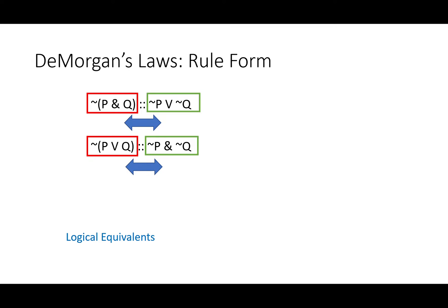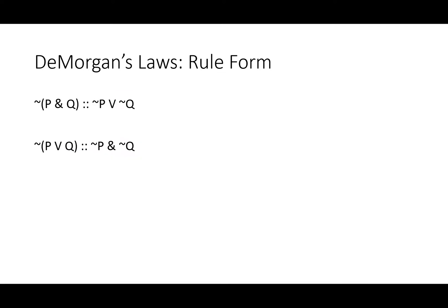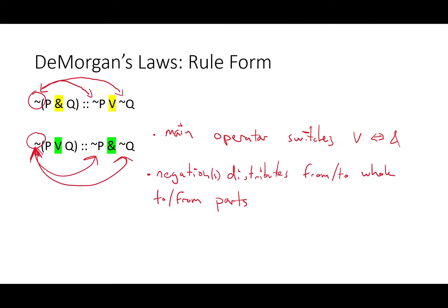Like all rules of replacement, these are logical equivalents. On either side of the four dots, we have two statements with the exact same truth value that can be substituted one for another at any time. Our first law says something like they're not both true is equivalent to one or the other is false, while the second says neither one is true is equivalent to both are false. In both of these laws, the main operator switches between V and AND, while the negations distribute from the whole to the parts or from the parts to the whole.